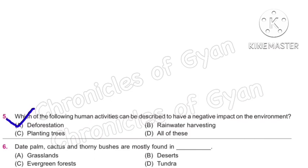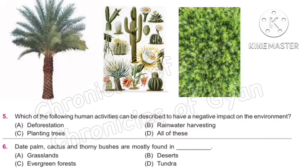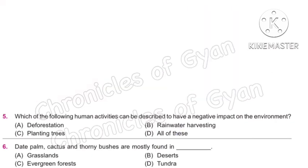Question 6: Dead palm, cactus, and thorny bushes are mostly found in? Dead palm is known as Khajoor in Hindi, and all three of these plants are found in deserts, meaning Registan.